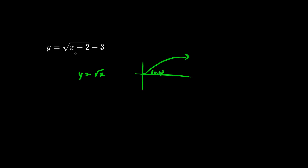Remember that for the x values we go counterintuitively two units to the right. So this origin goes two units to the right of the 0. And when you say minus 3, we go three units down.